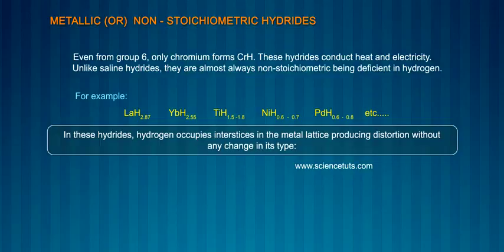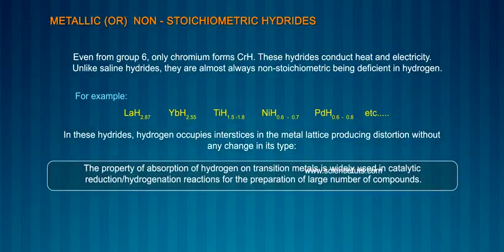In these hydrides, hydrogen occupies interstices in the metal lattice, producing distortion without any change in its type. The property of absorption of hydrogen on transition metals is widely used in catalytic reduction or hydrogenation reactions for the preparation of large numbers of compounds.